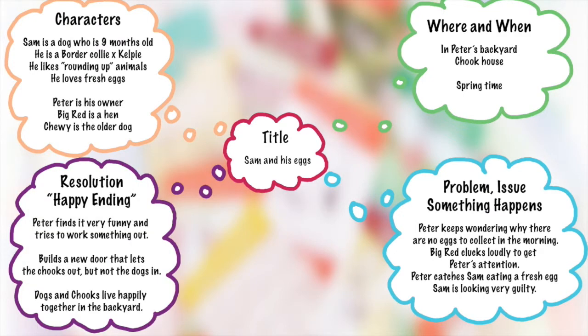Then we have our ending — our last mind cloud. This is what we call a resolution: the result of our problem, also what we call our happy ending. In this example, Peter finds it really funny that Sam is eating the eggs — at least it's not a snake or rats. The problem is he can't tell Sam off because he didn't catch him in the hen house; he caught him after the fact eating the egg. So what he decides to do is build a new door that lets the chooks out but doesn't let the dogs in. The happy ending is that the chickens are living happily together in the backyard as they should.